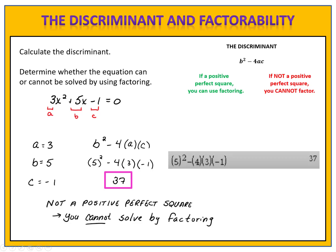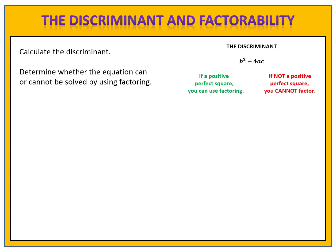It's important to note that the discriminant does not tell us what the solution or solutions to the equation are. The discriminant of 37 simply indicates that we cannot use the method of factoring.